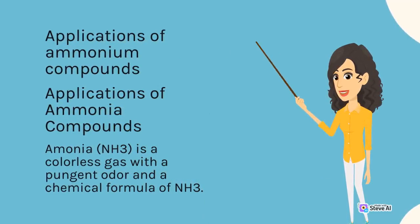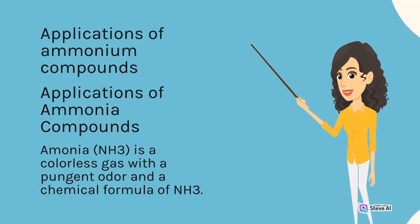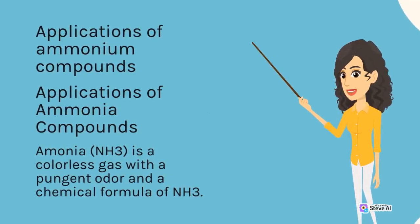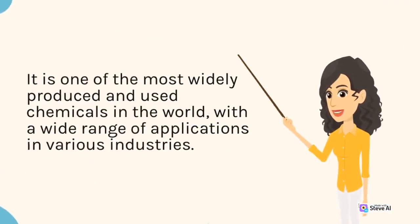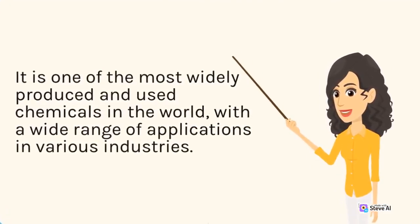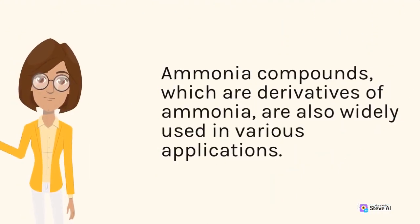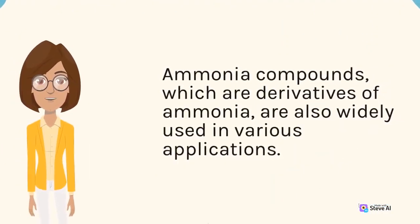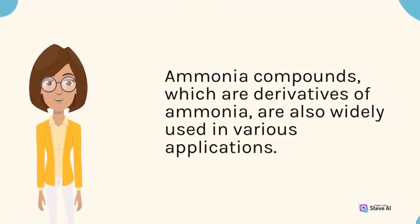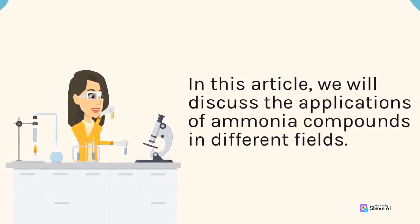Ammonia, NH3, is a colorless gas with a pungent odor and a chemical formula of NH3. It is one of the most widely produced and used chemicals in the world, with a wide range of applications in various industries. Ammonia compounds, which are derivatives of ammonia, are also widely used in various applications. In this article, we will discuss the applications of ammonia compounds in different fields.